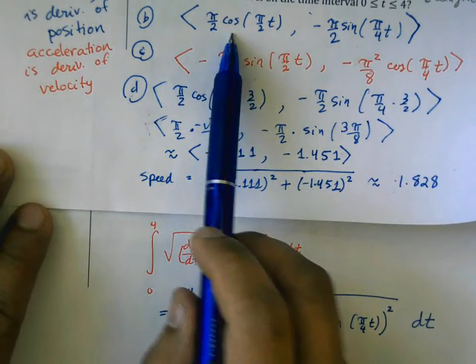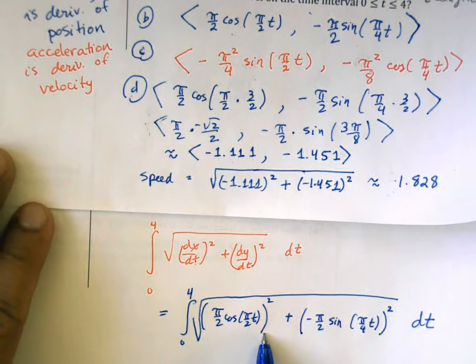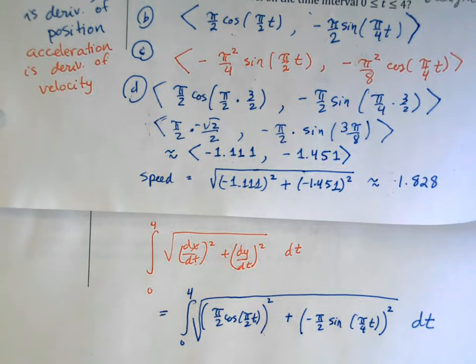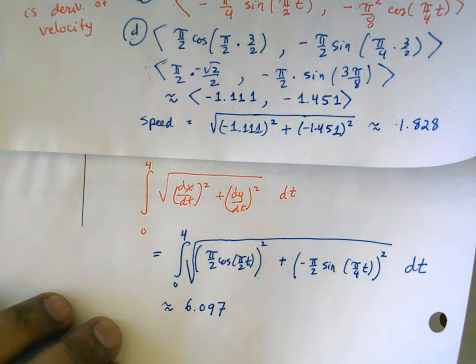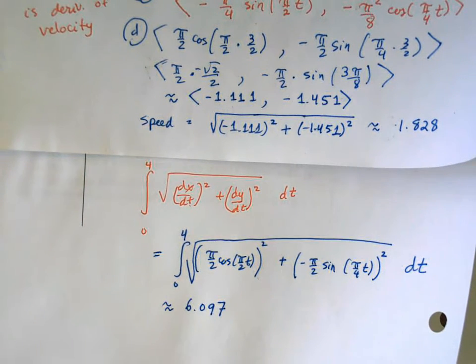So now all we need to do is take this velocity vector, substitute it into here, and then evaluate that integral. So I've taken the velocity vector, substituted it into the formula for arc length, and now we evaluate it on a calculator. And I get 6.097.